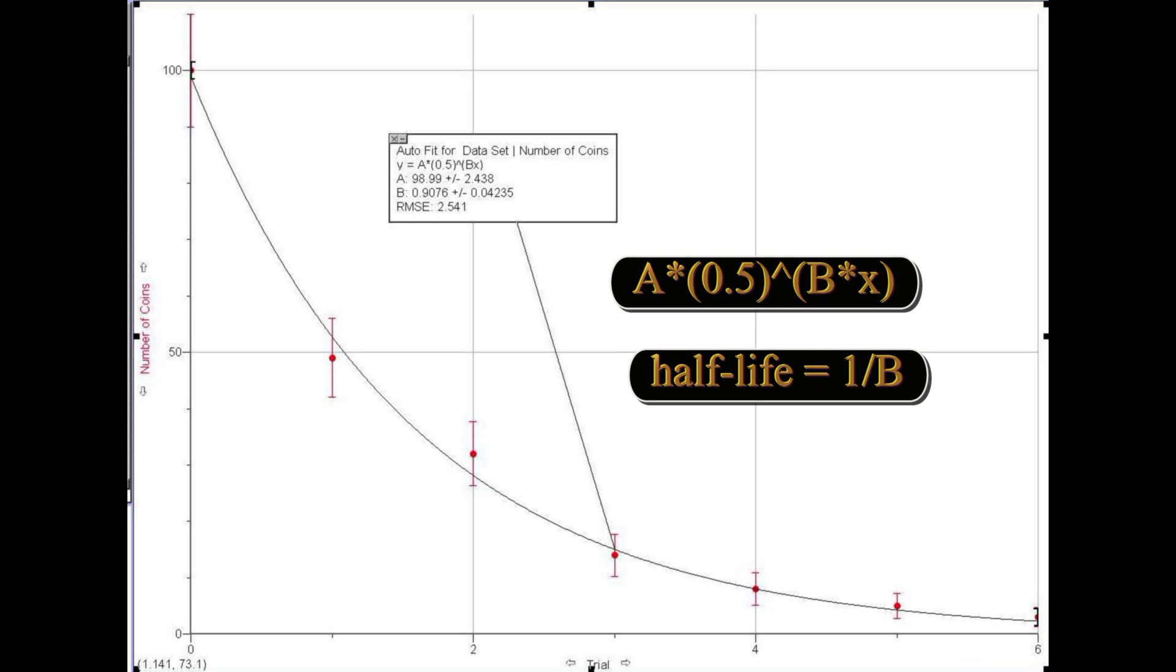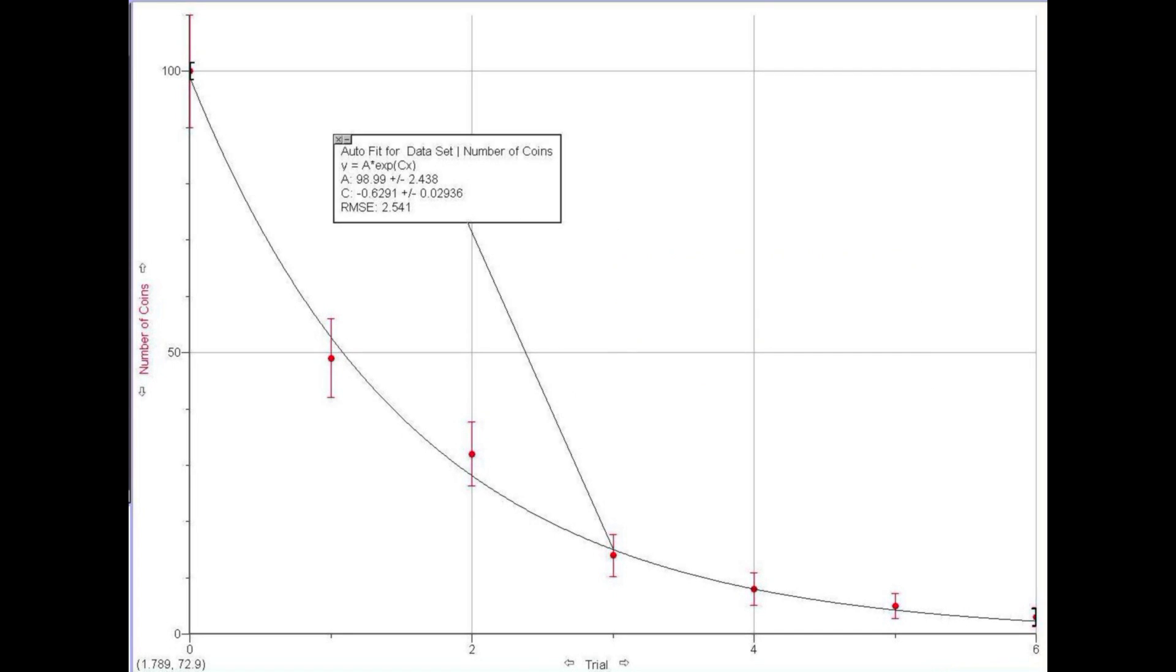Instead of flipping 100 coins, you will have data on nearly 1,000 coins, depending on the number of groups. Fit a function of the form a times 0.5 raised to the b times x. The inverse of b is the half-life. Now fit an exponential curve to the same data. From this fit, you can determine lambda, the decay constant.